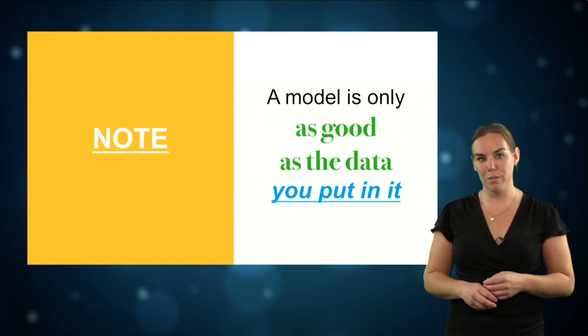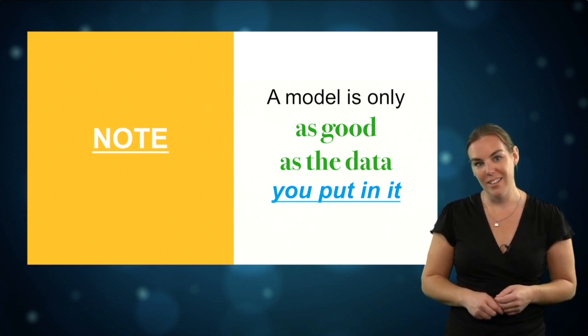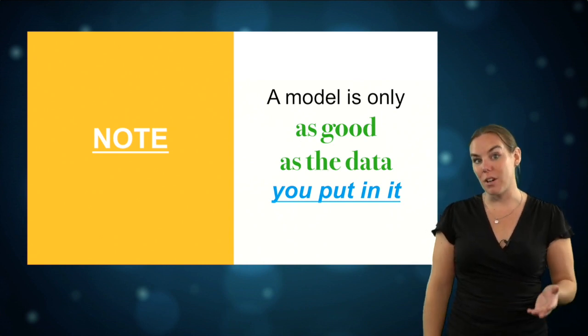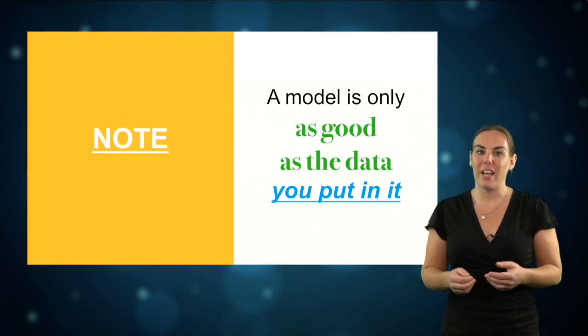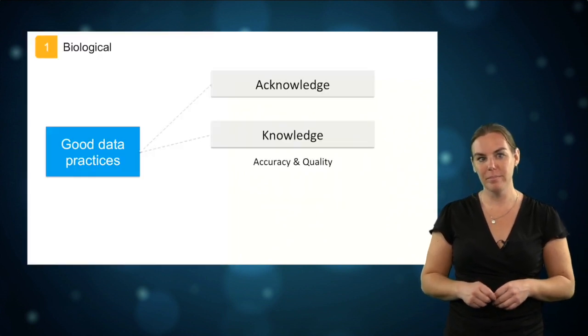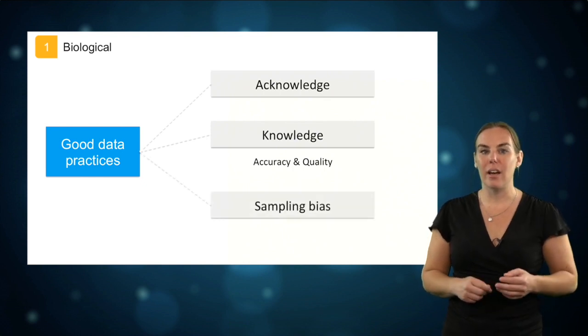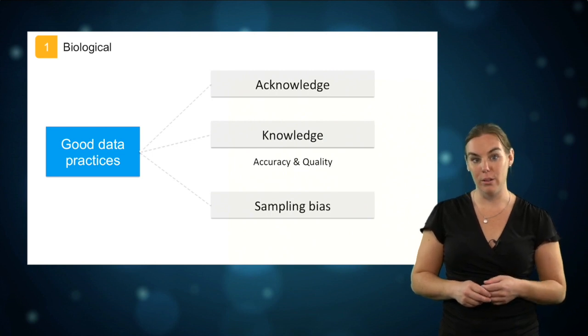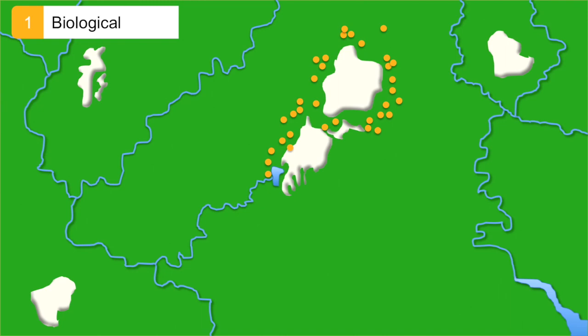Remember that the output of a model is only as valid as your input data. There is an old saying: garbage in, garbage out, which means that if you run a model with nonsensical data, you will get a nonsensical outcome. Another thing to keep in mind is that occurrence data can sometimes be biased towards the accessibility of sampling locations. Species are more likely to be observed near places where people go, and thus occurrence data can be lacking for remote areas. This can lead to a non-representative sample of the environmental conditions, although this is not necessarily the case.